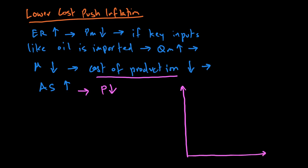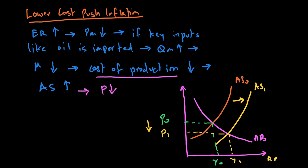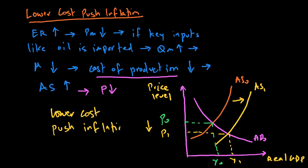So there will be not only lower demand-pull inflation, but also lower cost-push inflation. We can show this through the AD/AS framework: if AD and AS give us price level P0, then as oil or key inputs become cheaper due to the strong exchange rate, aggregate supply rises — not only does GDP rise, but the price level also falls, meaning lower cost-push inflation. So one advantage countries with a strong exchange rate have is lower demand-pull and lower cost-push inflation.